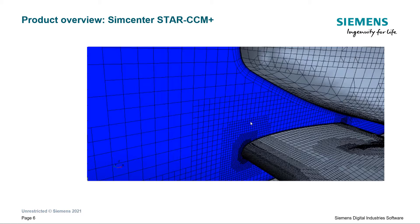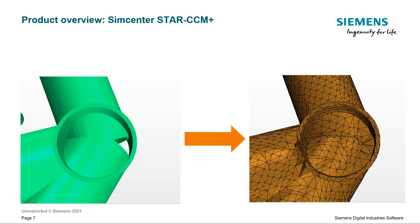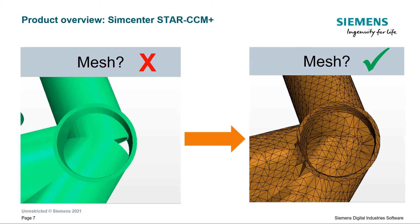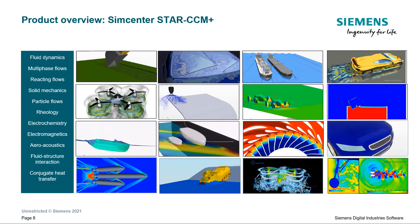One feature users enjoy is the surface wrapper, since it helps avoid large time investments in manually cleaning geometry. It wraps and therefore cleans the CAD. For example, unclean CAD with multiple intersecting parts and gaps in tubes — which would allow the mesh to go inside the tubes — cannot be meshed directly. The surface wrapper cleans this geometry by producing a non-intersecting and closed surface that can be used for meshing.